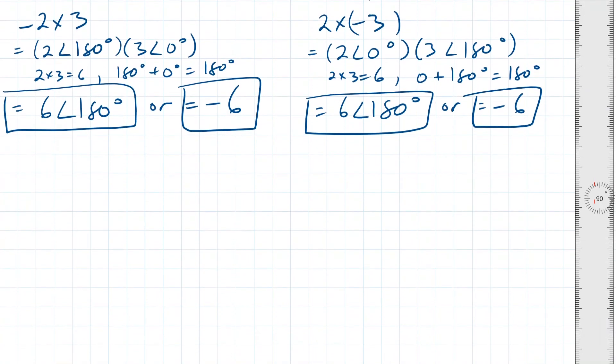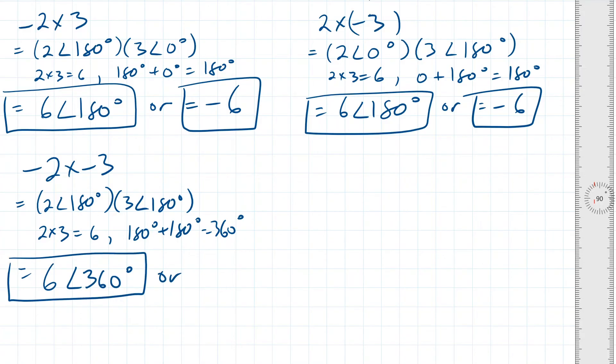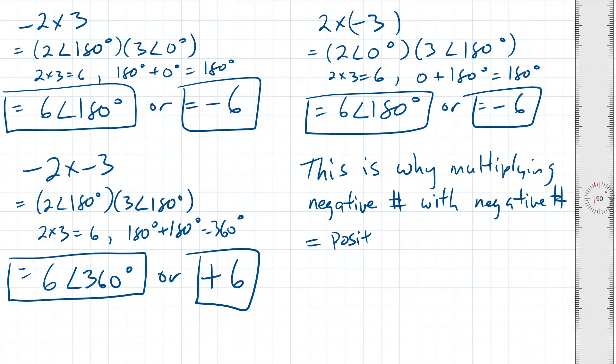And now for the crazy example. What if we multiply negative 2 by negative 3? Again, this can be represented by this expression. 2 with a phase shift of 180 degrees times 3 with a phase shift of 180 degrees. 2 times 3 is still 6, and 180 plus 180 equals 360 degrees. Remember that 360 degrees is a full rotation, which brings us back to 0 degrees again. So this is the actual reason why negative 2 times negative 3 equals positive 6. Mind blown number 1!